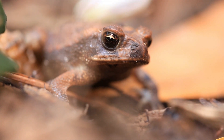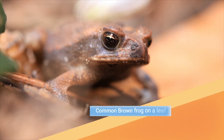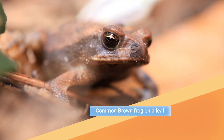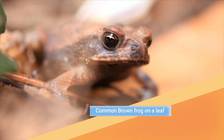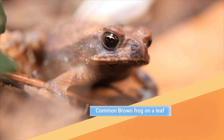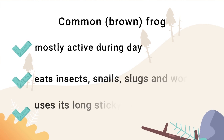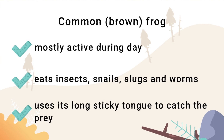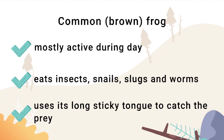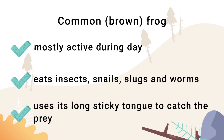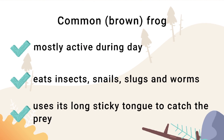Here's a common brown frog on a leaf. Common frogs are mostly active during the day. They eat insects like snails, slugs, and worms, and use their tongue to catch their prey.